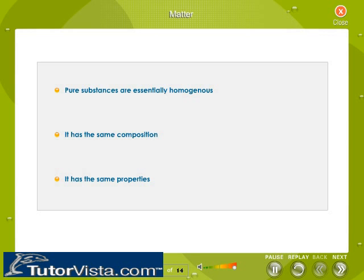Characteristics of a pure substance: pure substances are homogeneous. However, the converse is not true — not all homogeneous substances are pure substances. For example, a mixture of salt and water is homogeneous, but it is not a pure substance, as there may be impurities in the salt or water.